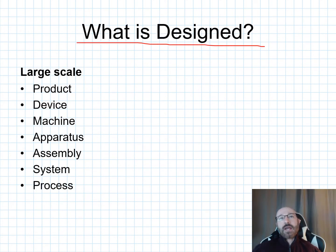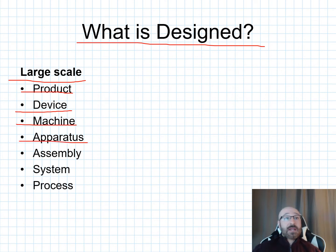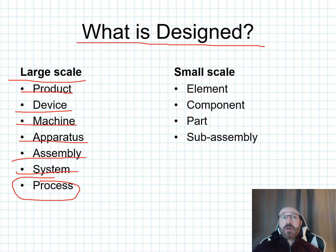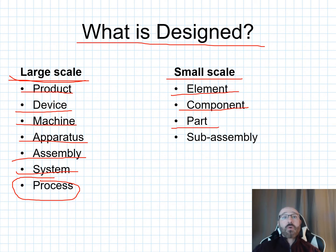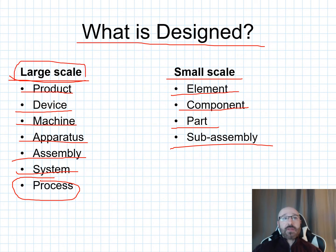On a larger scale, things that can be designed include a product, a device, a machine, an apparatus, an assembly, an entire system, or even a process. On a smaller scale, we can design parts that are part of a larger product — an individual element, a component of a system or product, a part, or a sub-assembly. This is important as you think about your project: what is the entire thing you're designing, and what are the smaller components and sub-assemblies that go into your larger-scale final design?